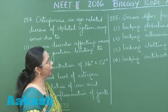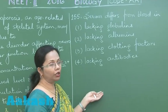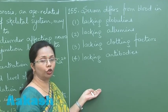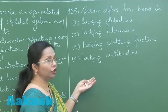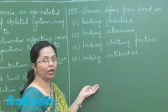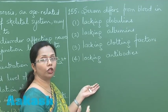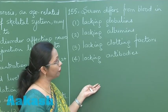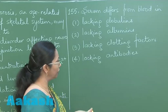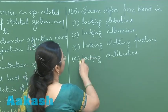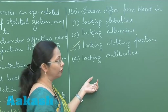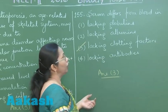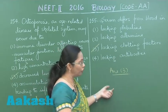Question 155: Serum differs from blood. Serum is a pale yellow liquid obtained after the blood has undergone clotting. It is very similar to plasma, but some clotting factors used up in forming the clot — like fibrinogen, factor 5, and factor 8 — will be absent from it. The correct answer is option number 3: lacking clotting factors.